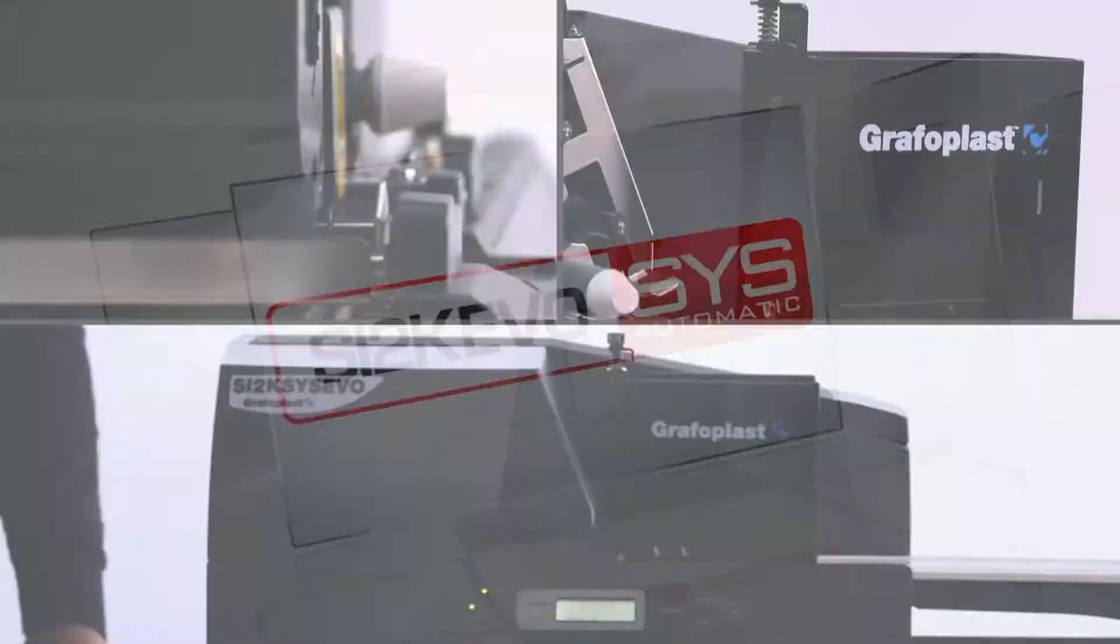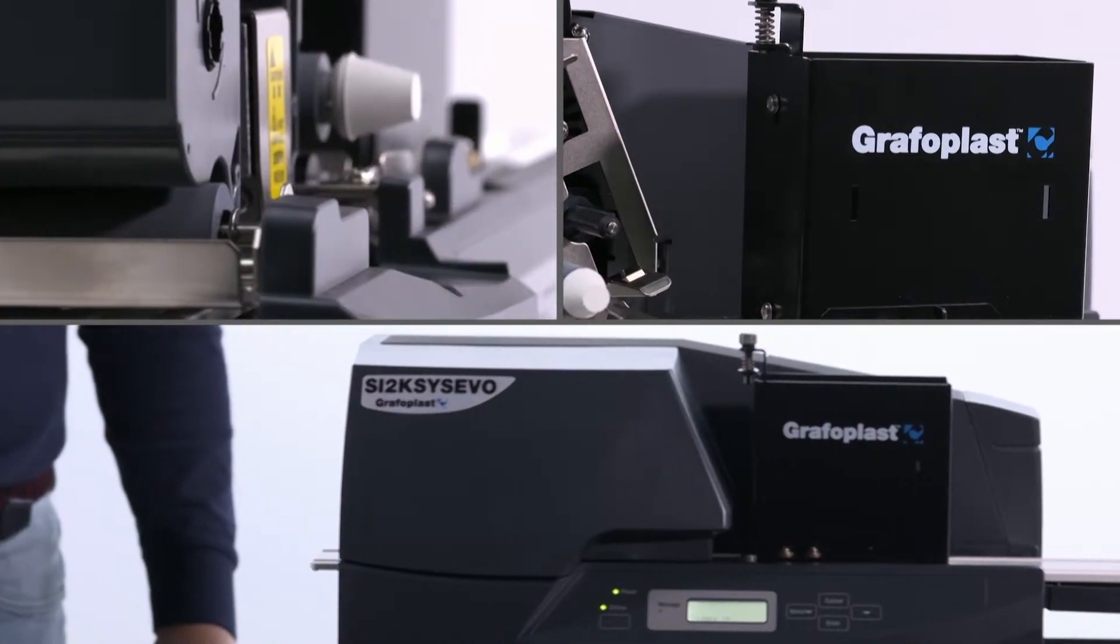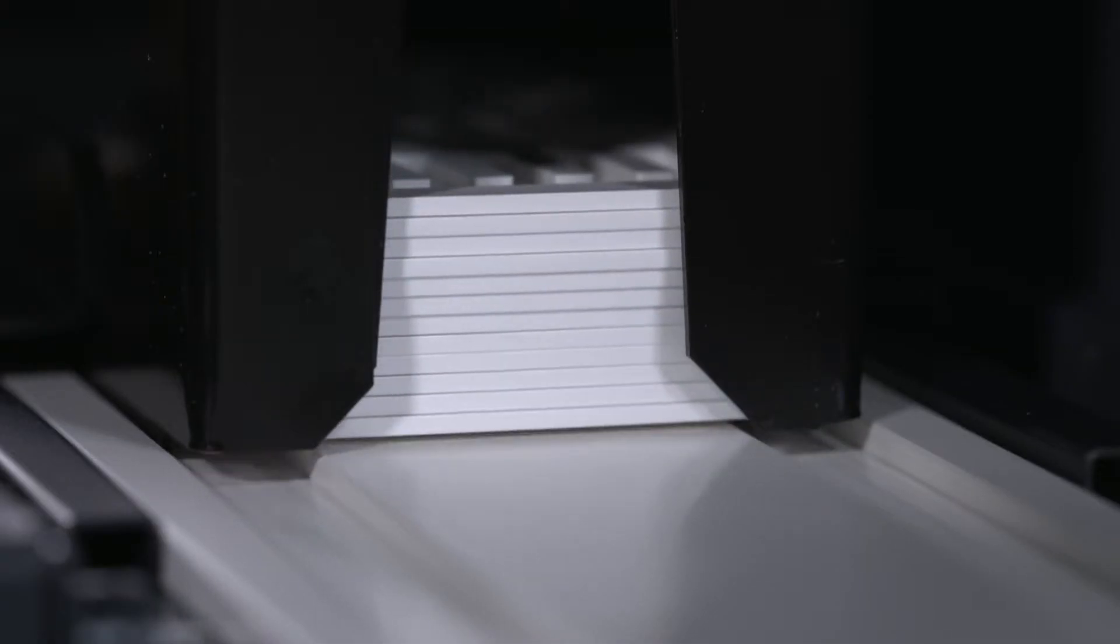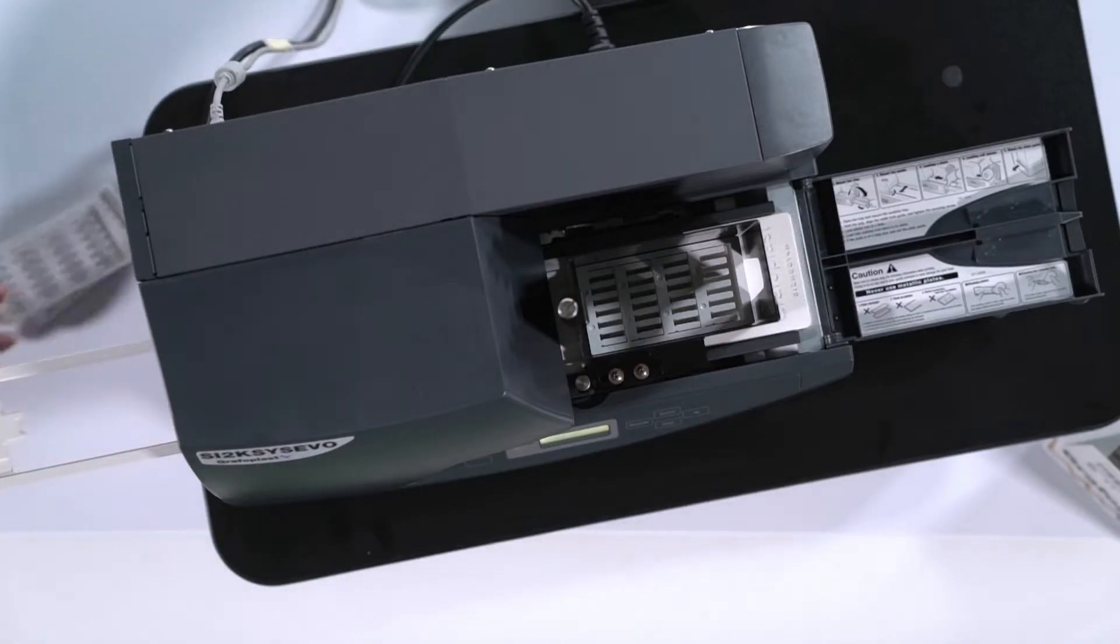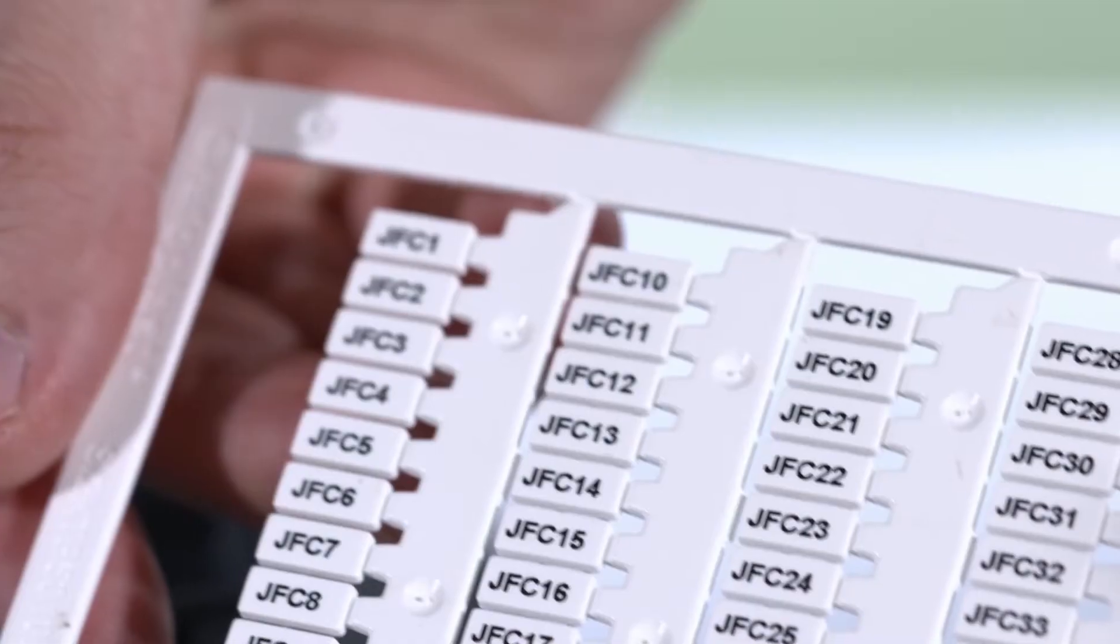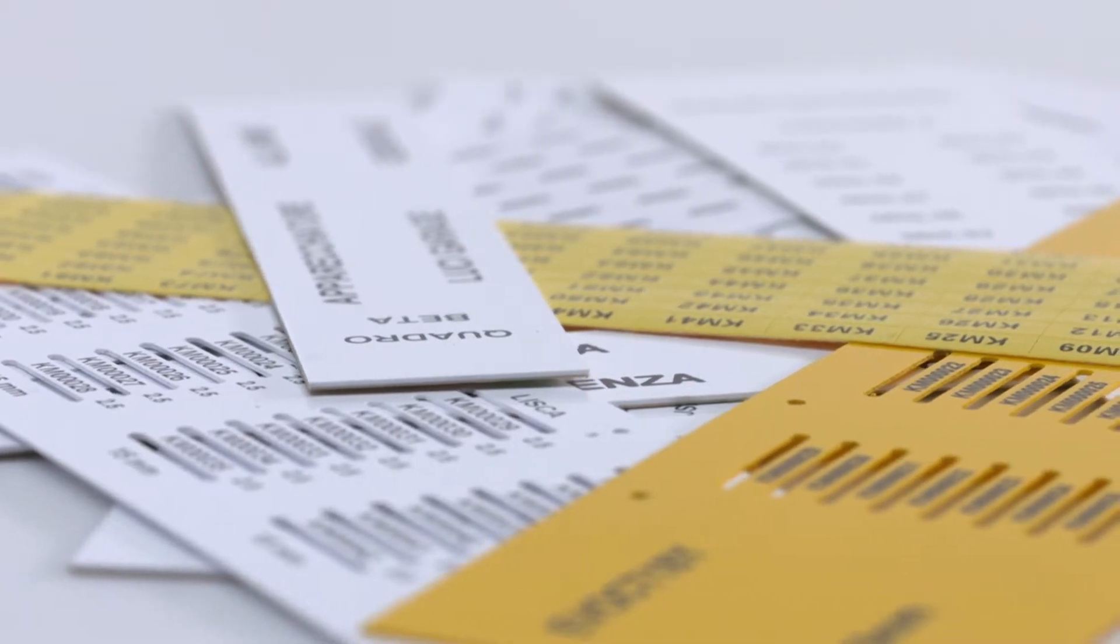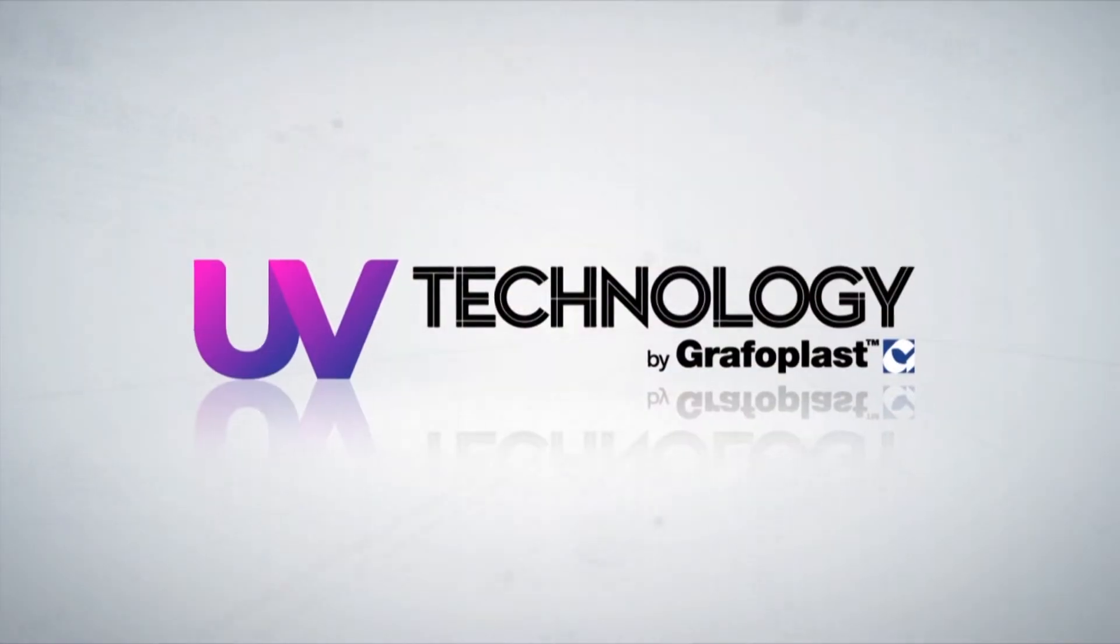The SI2K EVO printer, developed by Graphoplast with thermal transfer technology, meets all identification requirements. From cables to terminal blocks to push buttons and name plates, with the consumables of the new UV technology series.